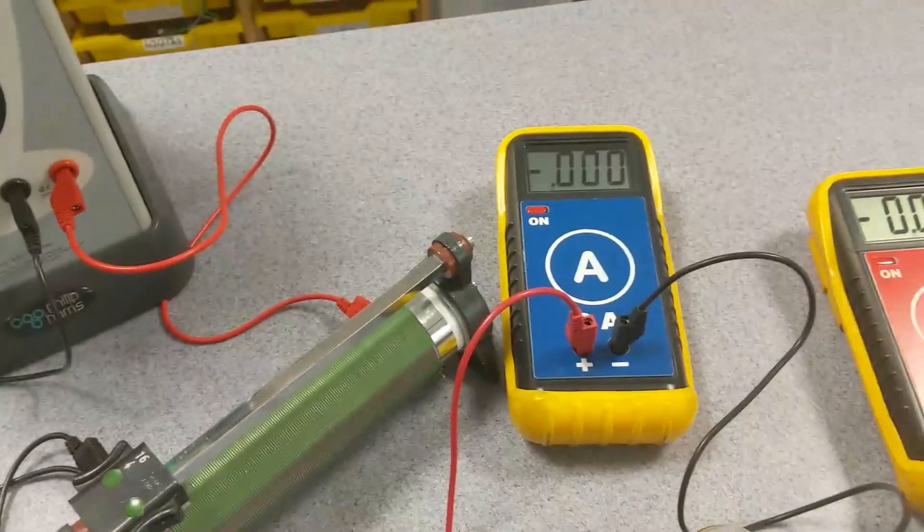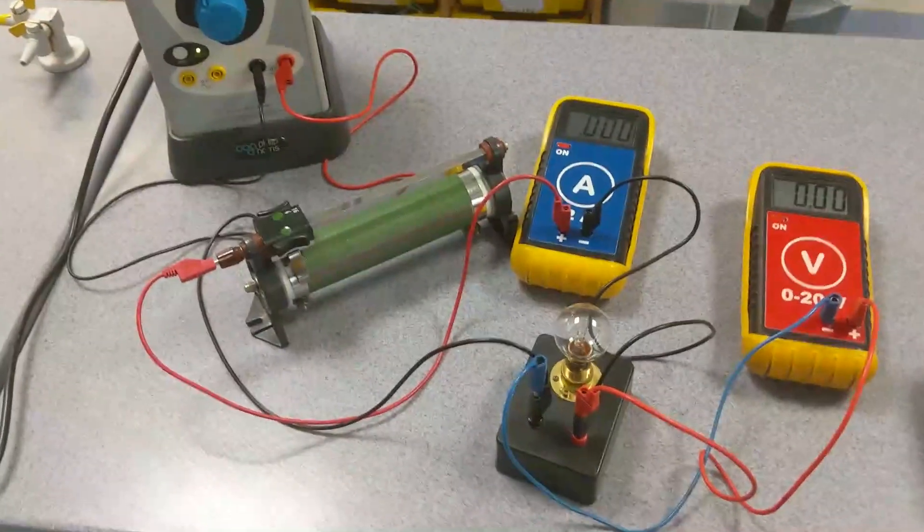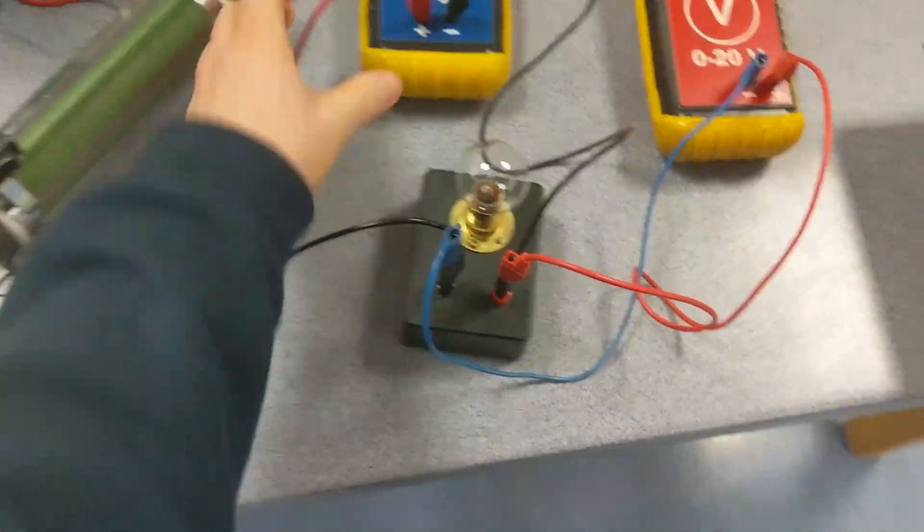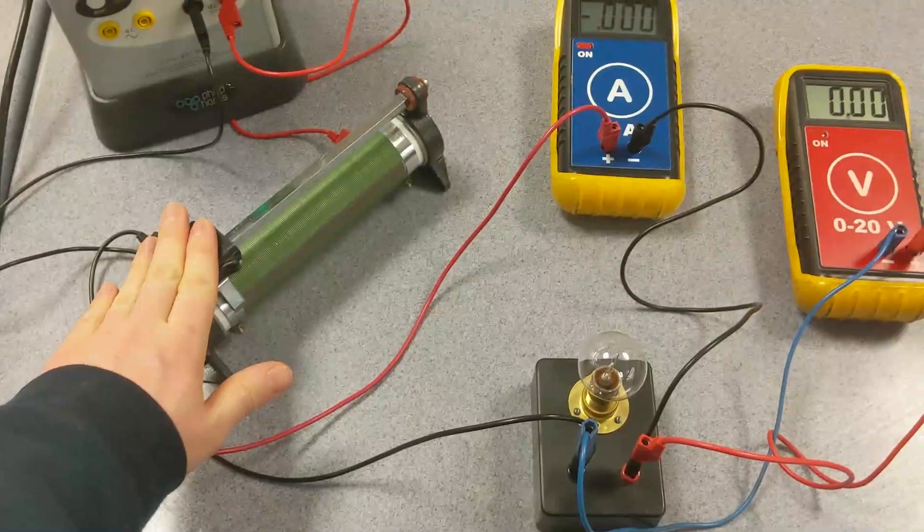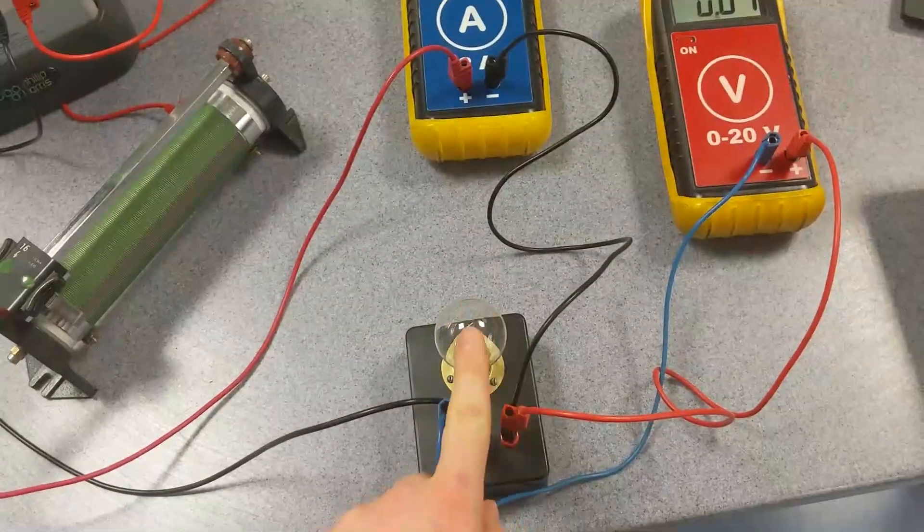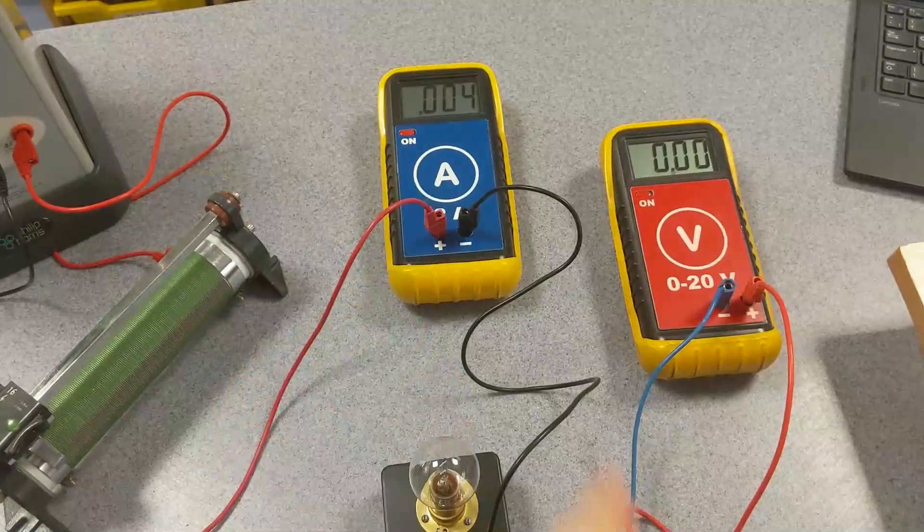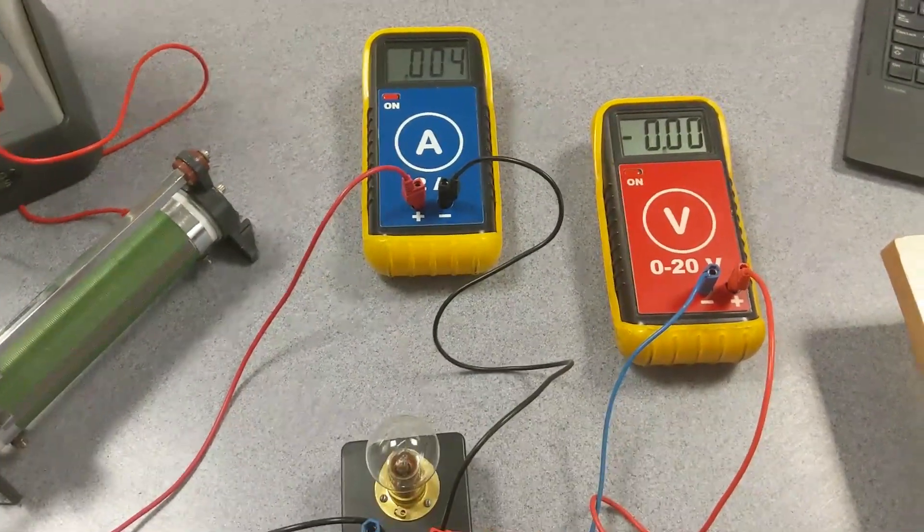Now we've got our circuit here, so we've got our variable resistor here which will alter the voltage across the filament bulb and our ammeter to record the current as well.